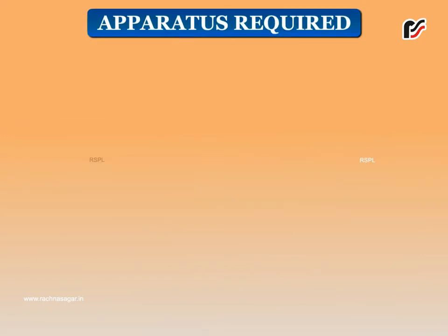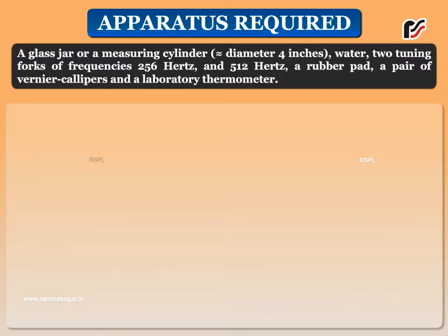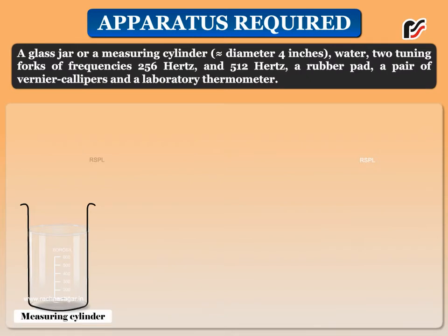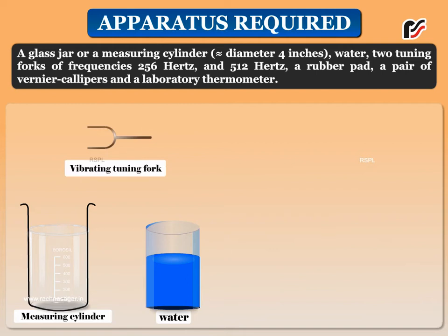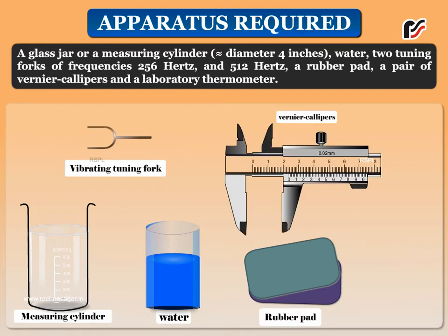Apparatus required: A glass jar or a measuring cylinder of diameter 4 inches, water, two tuning forks of frequencies 256 Hz and 512 Hz, a rubber pad, a pair of Vernier calipers, and a laboratory thermometer.